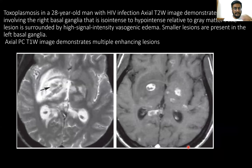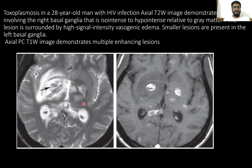In the second case, a 20-year-old patient with known HIV infection and toxoplasmosis. On axial T2-weighted images, there is involvement of the right basal ganglia, which is iso-intense to hyper-intense relative to grey matter. The lesion is surrounded by high signal intensity, representing vasogenic edema. Smaller lesions are also present in the left basal ganglia. On axial post-contrast, there are multiple enhancing lesions.